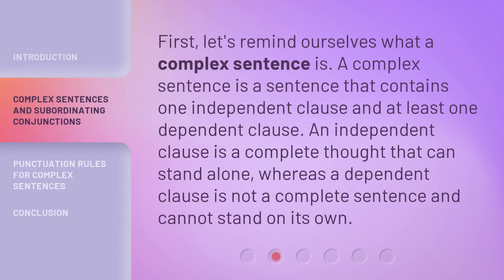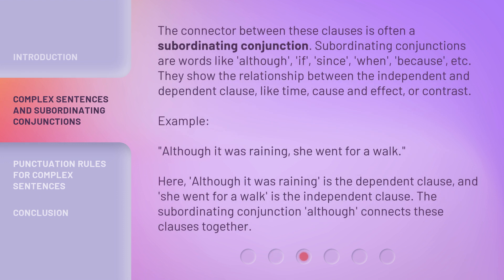First, let's remind ourselves what a complex sentence is. A complex sentence contains one independent clause and at least one dependent clause. An independent clause is a complete thought that can stand alone, whereas a dependent clause is not a complete sentence and cannot stand on its own. The connector between these clauses is often a subordinating conjunction. Subordinating conjunctions are words like although, if, since, when, because, etc. They show the relationship between the independent and dependent clause, like time, cause and effect, or contrast.